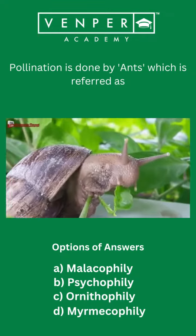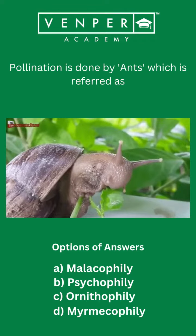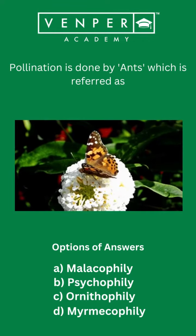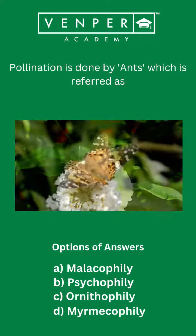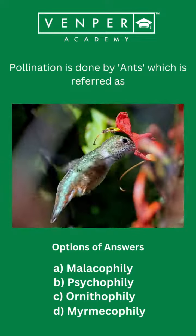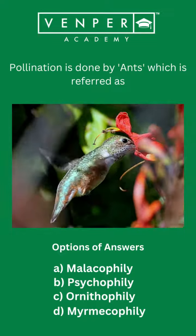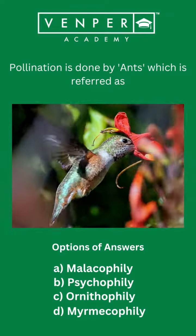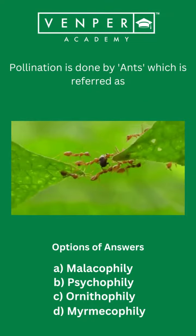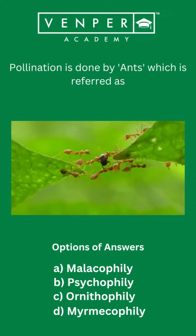Option A, malacophily, represents pollination by snails. Option B, psychophily, represents pollination done by butterflies. Option C, ornithophily, represents pollination by birds. Option D, myrmecophily, represents pollination by ants.